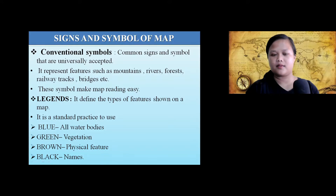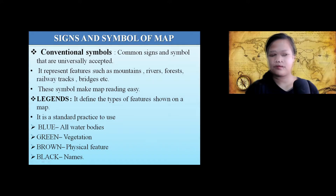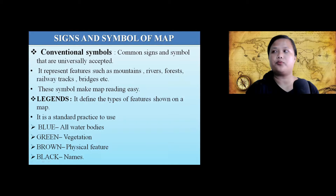Next is legends. Legends are the types of features shown on a map. For example, churches on a map are shown as a cross symbol. Other legends include color coding: water bodies are shown in blue, vegetation in green, physical features in brown, and names in black.